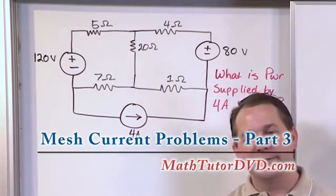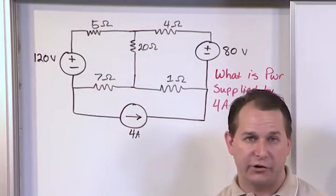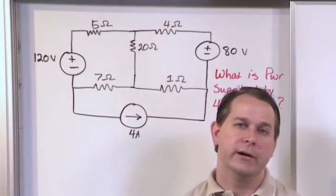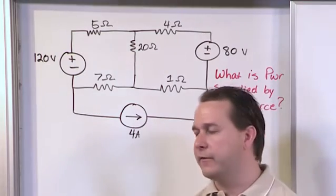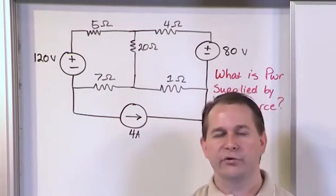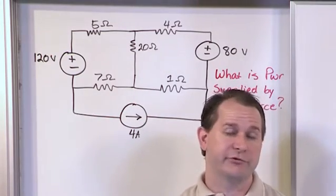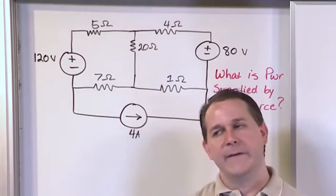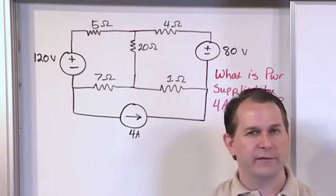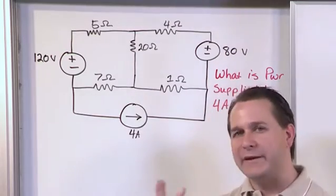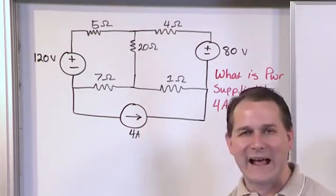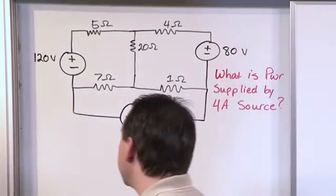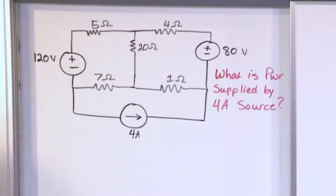So this is the first circuit in our mesh current section where we're actually going to involve a current source. And anytime you have a current source running around a mesh problem when you're trying to use mesh techniques, you need to think a little bit. But my advice is just set up the problem exactly the same as all the other ones. It's not like a magical new class of problems. You just do it all the same way.